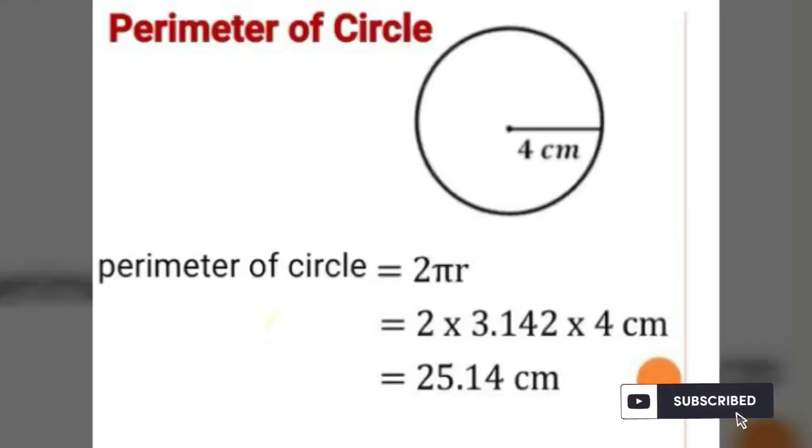For example, radius 4cm, then Perimeter of Circle equal to 25.14cm.